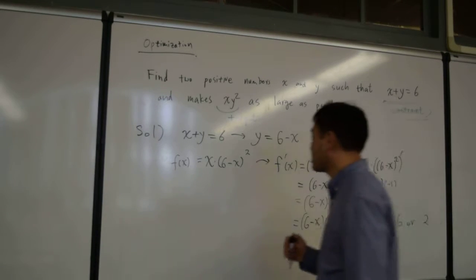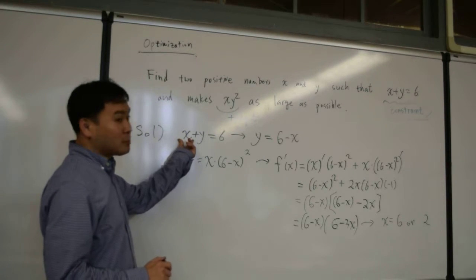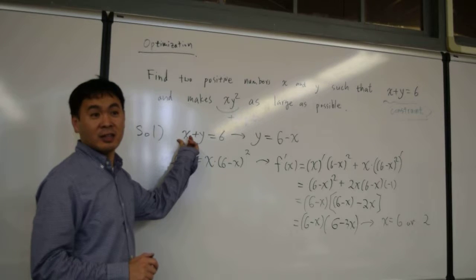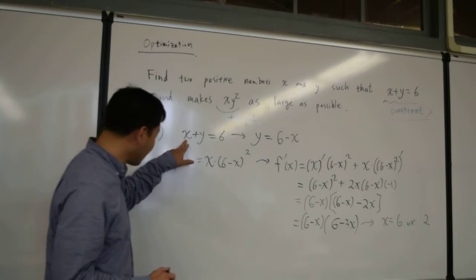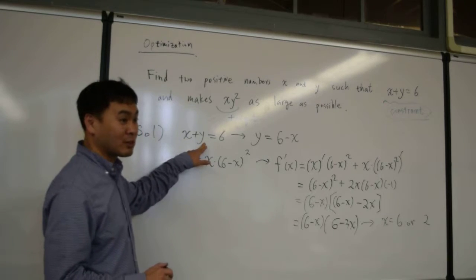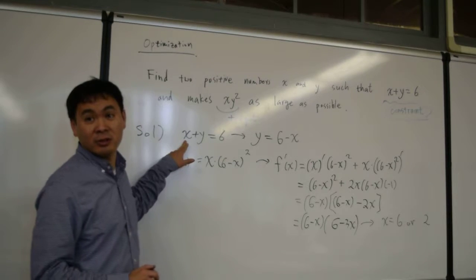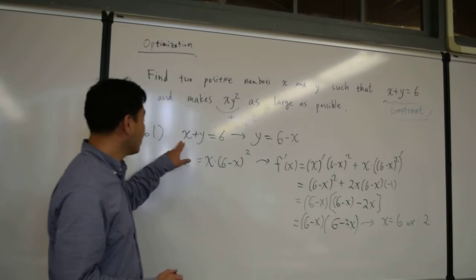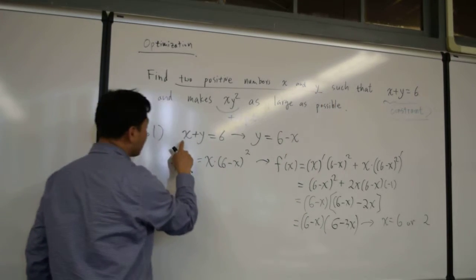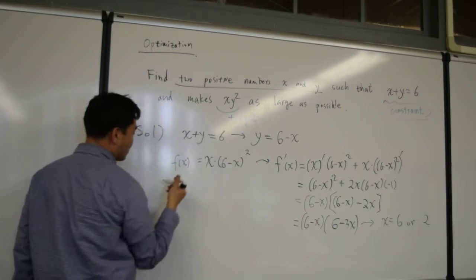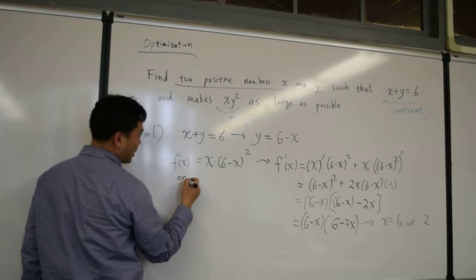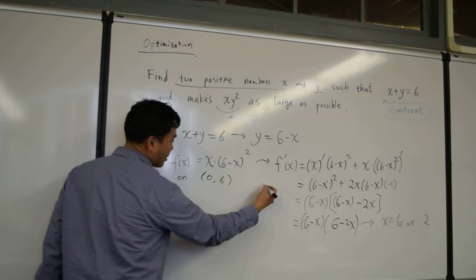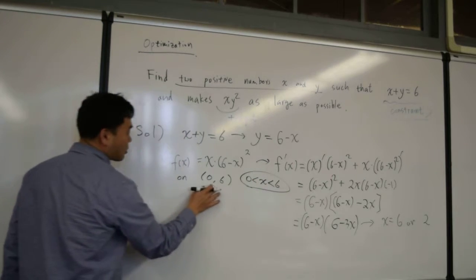Now let me talk about the domain a little bit. x is positive. Can x be as large as you want? Can x be 8? No, why not? Because if x is 8, then y becomes negative 2. That's not allowed. So x has to be less than 6. If it's 6, then y becomes 0, that's no good. So just by looking at this, you can determine that x has to be between 0 to 6. We're really considering this function on the open interval 0 to 6. Or another way to say it is that x is less than 6 and x is bigger than 0. That's what we are trying to do.